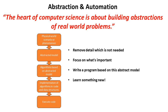So what do we mean by automation? Well, once we've removed the details that aren't needed, focused on what's important, written a program based on the abstract model, we can then run this model and learn something new. And this is the really exciting bit about computer science.